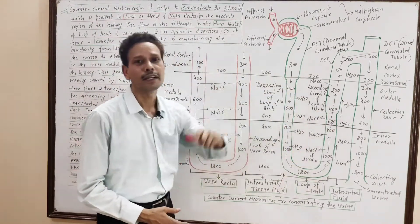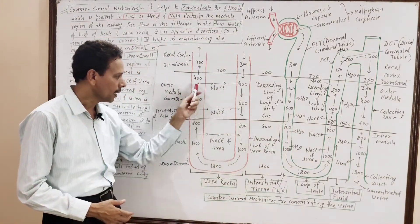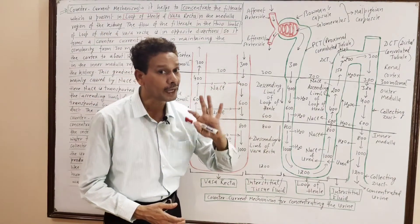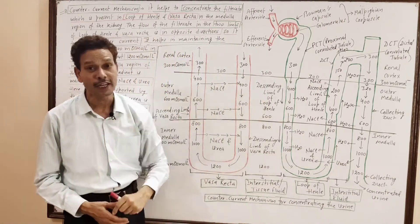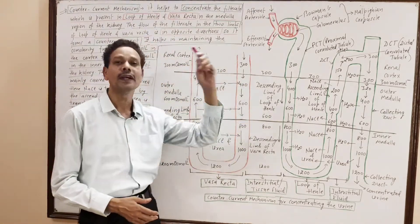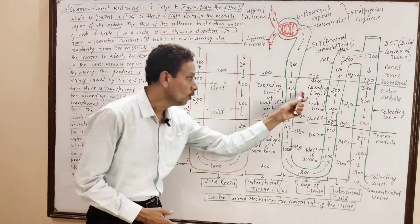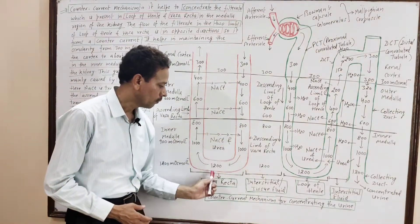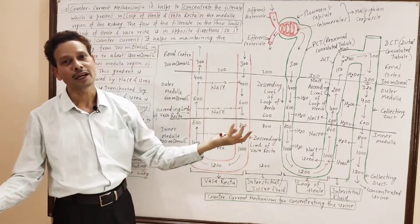In the descending and ascending limbs of the loop of Henle, as well as the descending and ascending limbs of the vasa recta, the flow of filtrate is in opposite directions. That is why the system is named the counter current mechanism. Counter current means opposite flow of filtrate. Both the vasa recta and loop of Henle produce the counter current system.